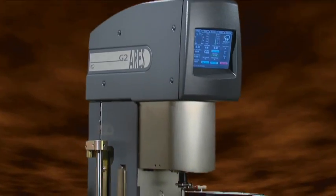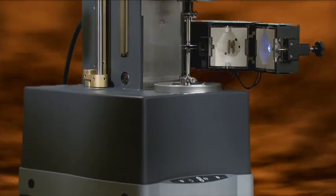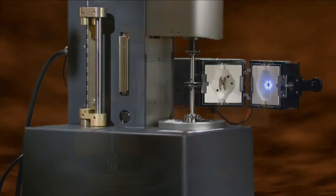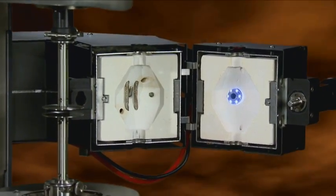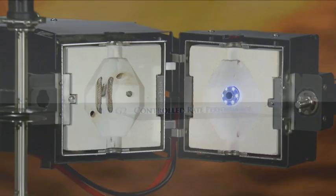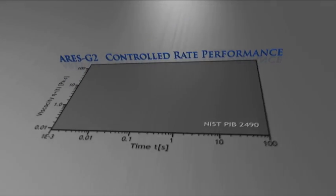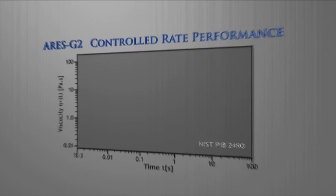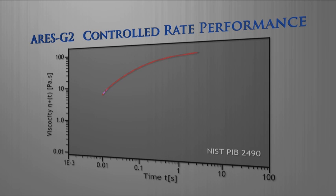The ARES G2 is a powerful rheometer capable of measuring flow and deformation of materials ranging from water to steel. Time-dependent viscosity is easily measured over a very wide range of shear rate. The characteristic transition from linear to non-linear behavior is documented by the appearance of a stress overshoot.